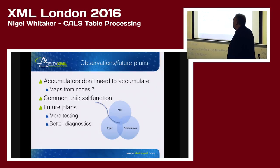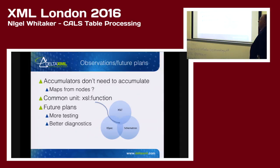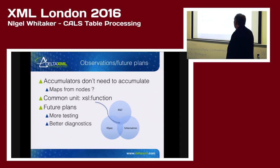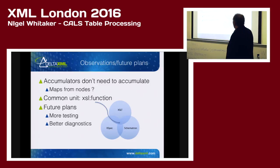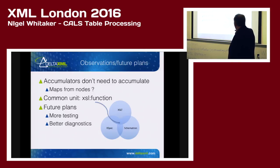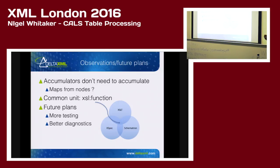A few comments about what we discovered in the process. Accumulators don't need to accumulate — you don't need to use dollar-value, and we found that a useful approach. It's almost like a map from a node to some data you want to calculate. Another thing is that the function is our kind of common unit. XSpec allows us to test functions. You can use the functions in the Schematron, you can use them in XSLT, and we use these functions more generally in our tables code. I thought when I first saw Schematron it was more about XPath, but I'm beginning to conclude it's equally at home with functions.